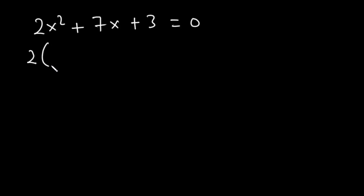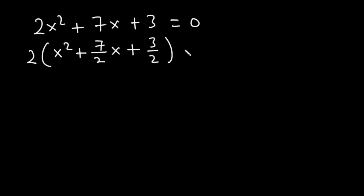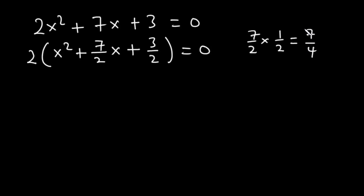We have 2 on the outside. Then 2x squared divided by 2 is x squared, 7x divided by 2 is 7 over 2 times x, and 3 divided by 2 is 3 over 2, giving 2(x² + 7/2 x + 3/2) = 0. The next step is to add and subtract the square of half the coefficient of x. The coefficient of x is 7 over 2, and half of that is 7 over 4 (since 7 × 1 = 7 and 2 × 2 = 4).